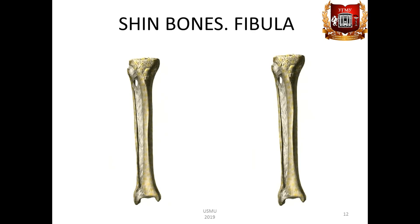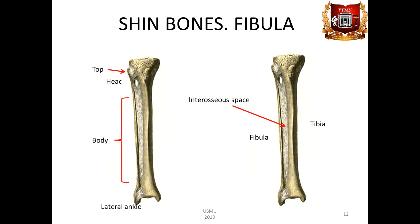Shin bones are represented by the tibia and the fibula. The first is in the medial position, the second is located along the lateral edge of the shin. There is the interosseous space of the shin, spatium interosseum cruris, between the bones. The fibula is a thin bone. At its proximal epiphysis we can see a head of the fibula, caput fibulae, with a pointed top, apex fibulae. On the inside of the head there is an articular surface for articulation with the tibia. On the body there are anterior margin, posterior margin, and the most acute interosseous margin, which is located medially.